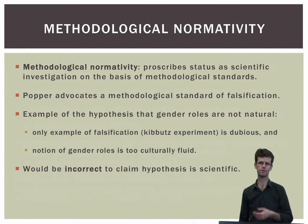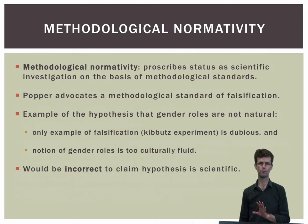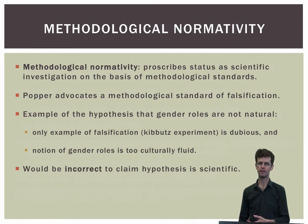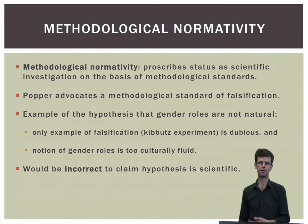According to Popper, investigations that involved propounding theories or hypotheses that could not be falsified should not count as science, because they do not fulfil the methodological requirement of being answerable to the empirical evidence. As an example, take the hypothesis that, in humans, gender roles are not natural but are culturally constructed. As Kitcher points out, the best attempt at a falsification so far — the so-called kibbutz experiment — does not provide a clear falsification of the hypothesis. More importantly, since the whole idea of a gender role is a cultural one, it's not clear what could count as a falsification. According to Popper, the hypothesis would therefore fail to count as scientific, as it fails in principle to fulfil the methodological standards required.